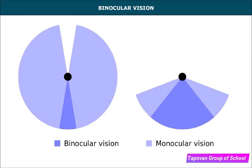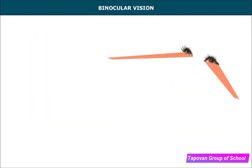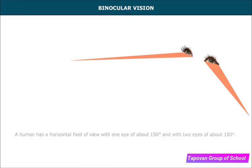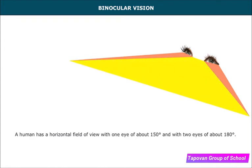Binocular vision is vision in which both eyes are used together, giving a wider field of view. For example, a human has a horizontal field of view of about 150 degrees with one eye and about 180 degrees with two eyes.